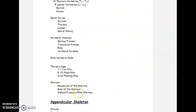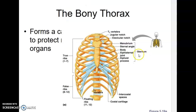The sternum has three major parts. The manubrium is the top portion. The body is the main middle part. And the pointed area at the bottom is called the xiphoid process. So the overall bone is the sternum, with the manubrium on top, the body in the middle, and the xiphoid process at the bottom.